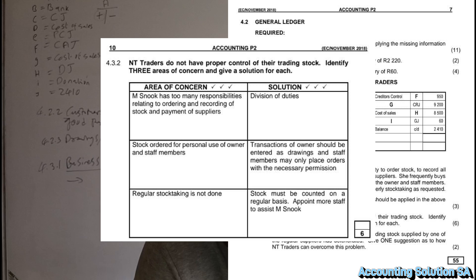And the solution is that the transactions of the owner shall be entered as drawings, and staff members may place orders with necessary permission. And the other one: regular stock taking is not done. And the solution: stock must be counted on a regular basis. Appoint more staff to assist M-Snog.